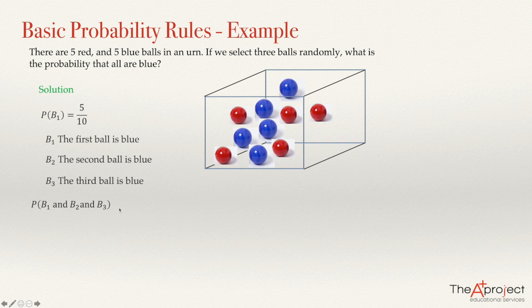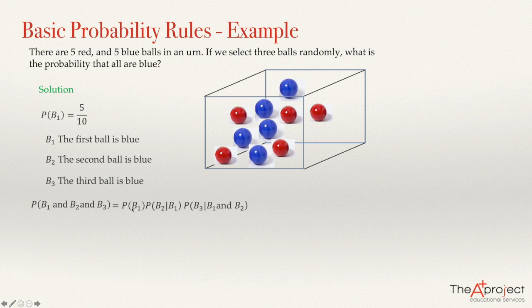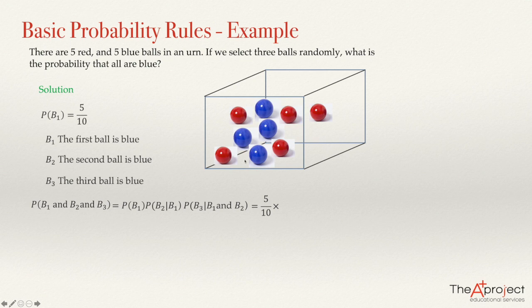We know that this probability will be the probability that the first ball is blue, times the probability that the second is blue given that the first was blue, times the probability that the third ball is blue given that the first and the second were blue. If the first one was blue, we now have only four blue balls out of nine balls remaining, so the probability that the second ball is blue given the first was blue is four over nine.